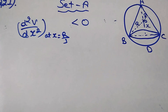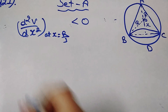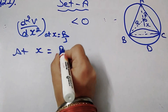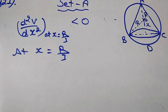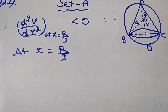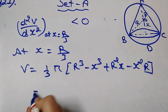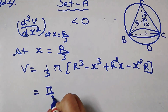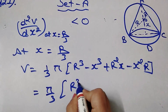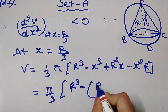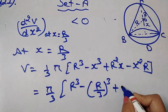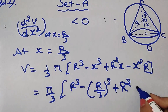At x = R/3, we find the maximum volume by substituting into V = (1/3)π(R squared − x squared)(R + x), with x = R/3.